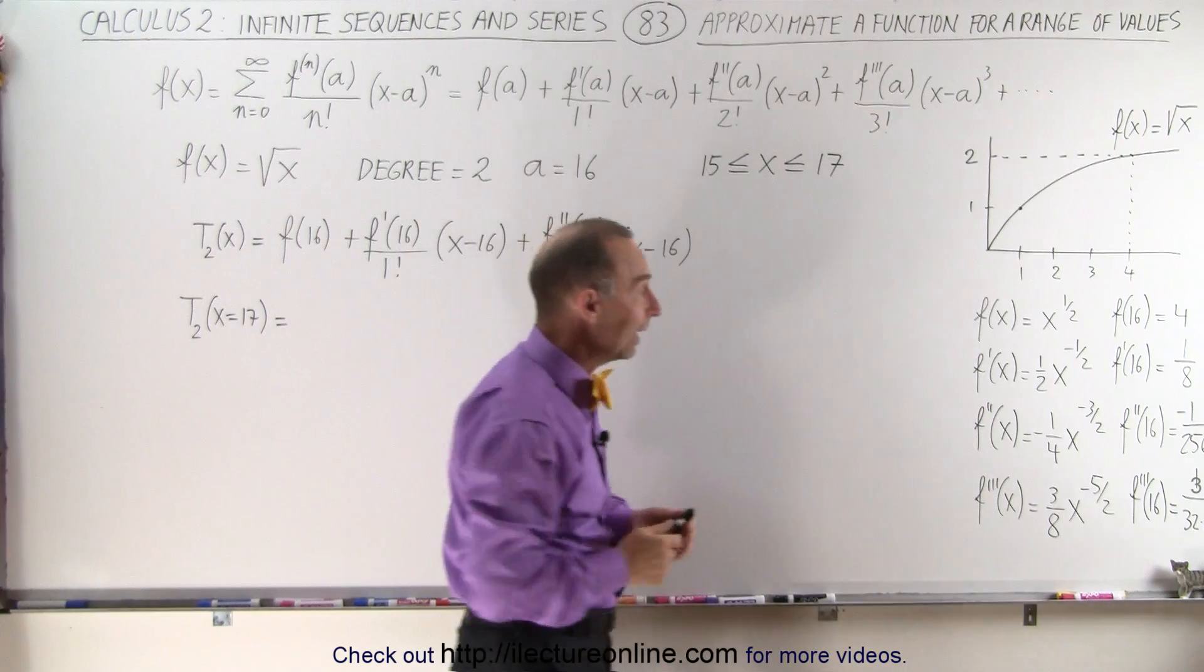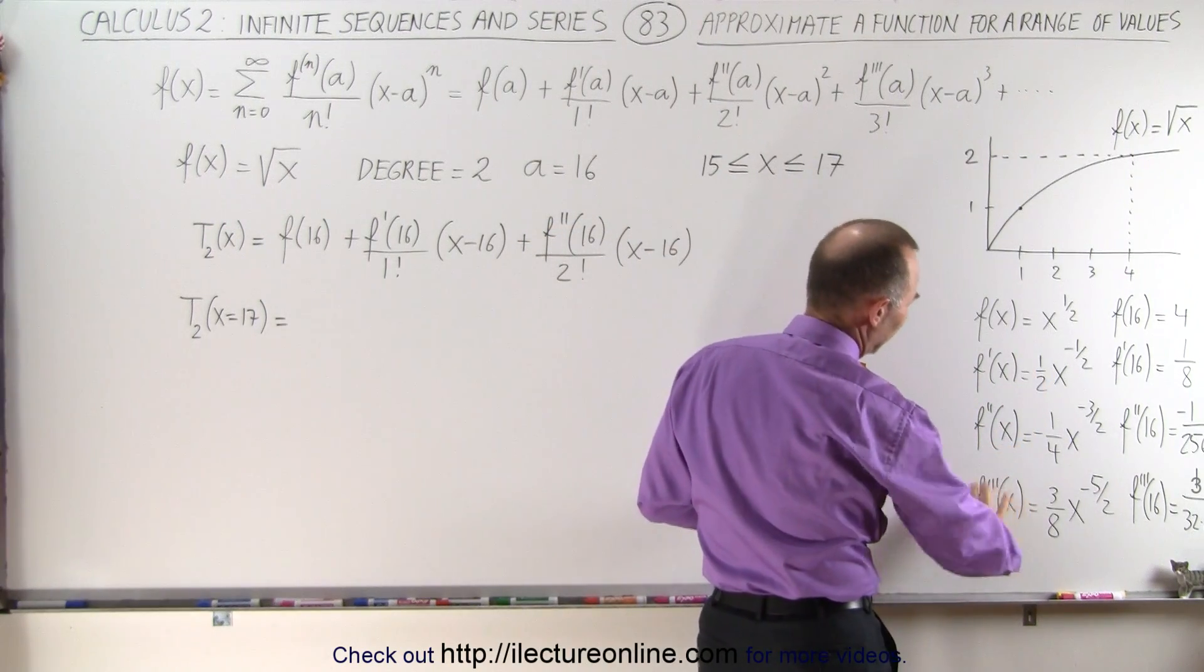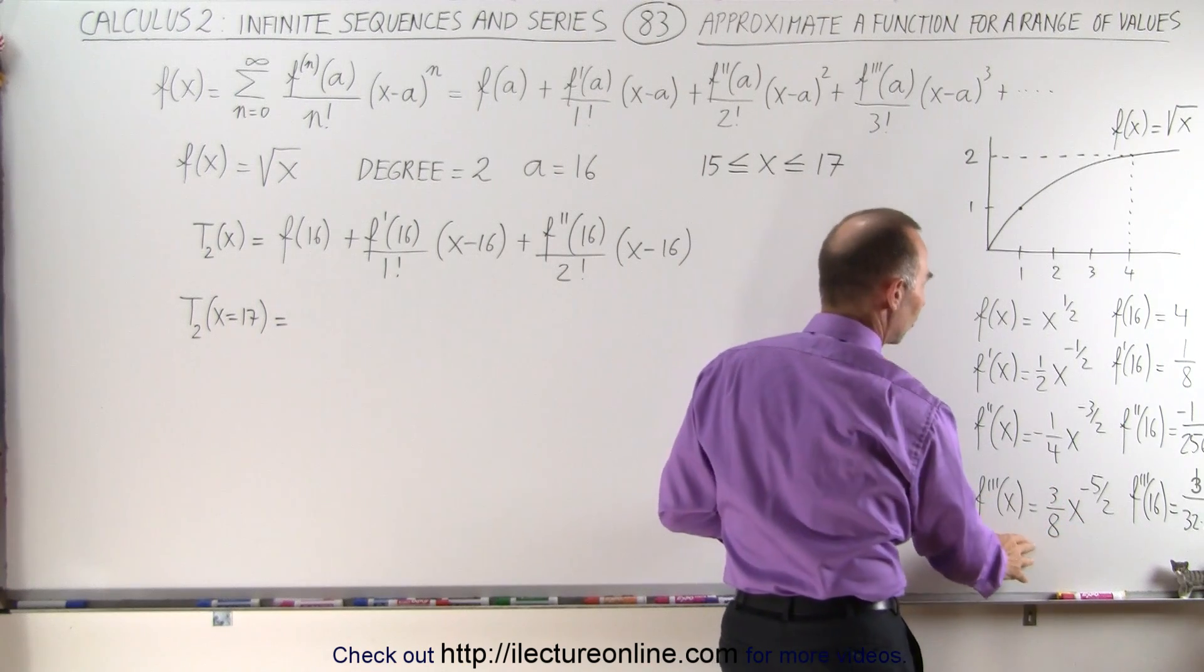for x equals 17 is equal to... And now notice what we've already done ahead of time. We've taken our function, we found the first derivative, the second derivative, the third derivative, which of course we didn't need here, but just so you can see how that works.